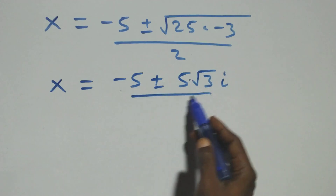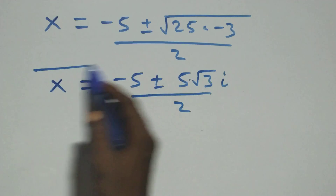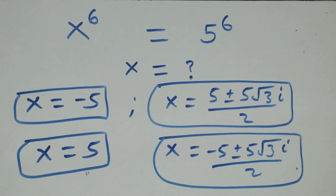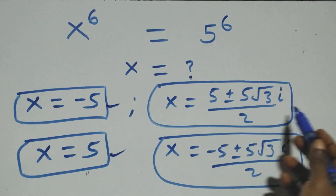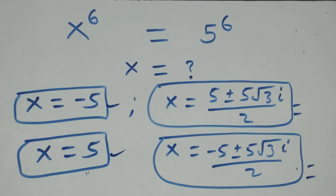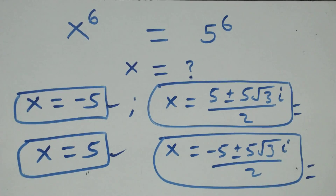Therefore, all together in this problem we have six solutions: two real solutions (x equals negative 5 and x equals 5), two complex solutions from Case 1, and two complex solutions from Case 2. Thank you for watching; don't forget to subscribe for more videos, turn on the notification bell, share, give a thumbs up, and leave your comments. See you next lesson, bye for now.